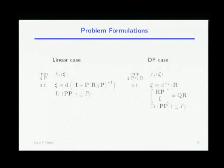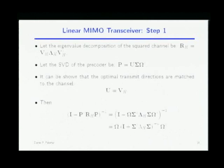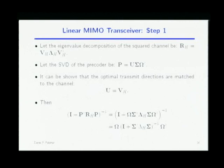Now I'm going to deal with these two mathematical problems. First step is a simplification. Let me write the eigenvalue decomposition of H^H H and the singular value decomposition of the precoder P = U Σ Ω^H. U and Ω are unitary matrices and Σ is a diagonal matrix containing the power allocation. Now instead of optimizing P, I optimize U, Σ, and Ω.